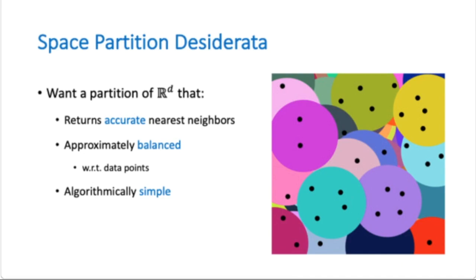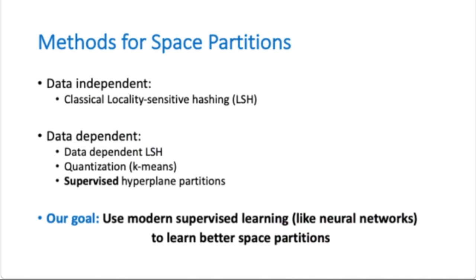There are many existing ways to build space partitions for nearest neighbor search. The classical locality-sensitive hashing constructs partitions which are independent of the data set. Other methods try to fit a partition specific to a data set, like k-means. Our goal is to leverage the power of modern supervised learning, like neural networks, to learn even better space partitions.